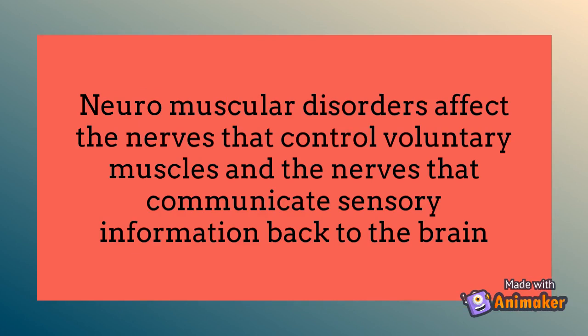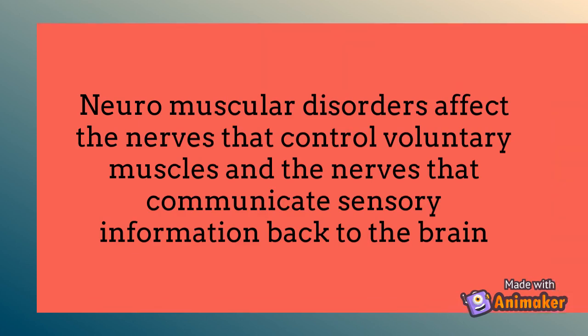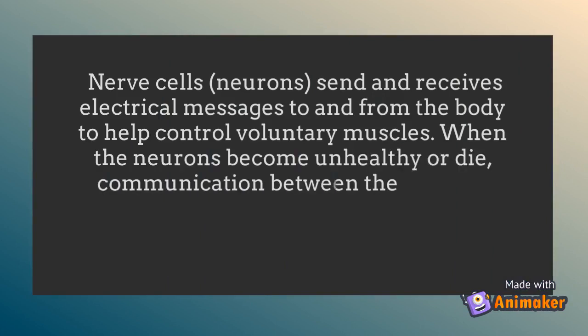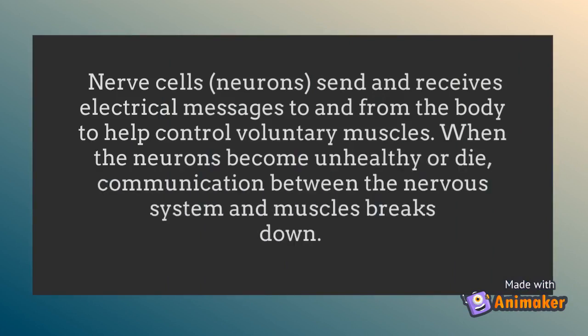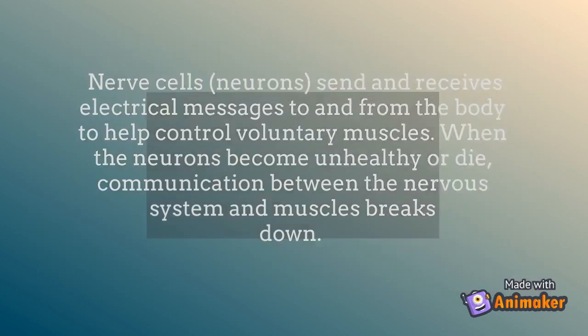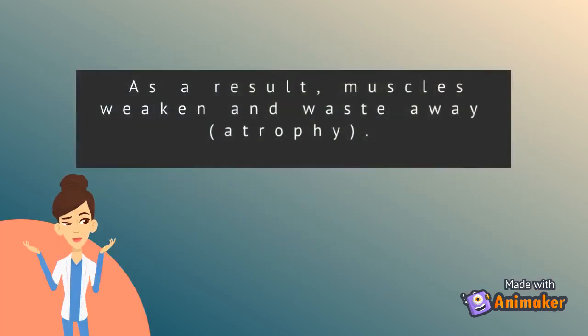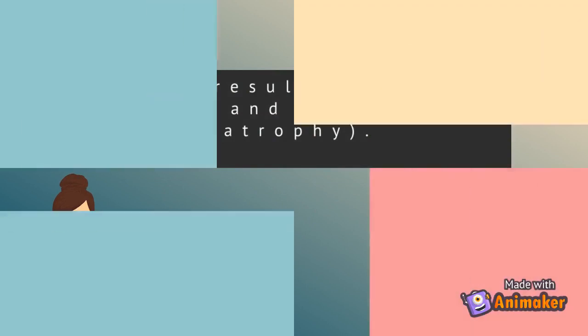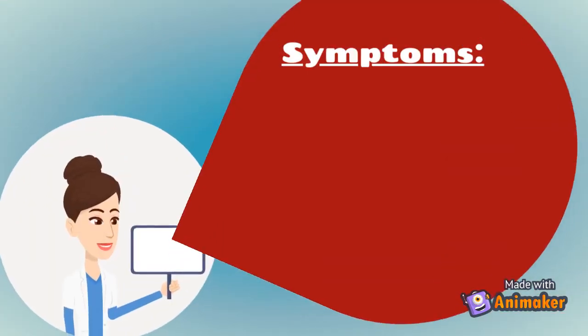Metabolic muscle disorders interfere with the chemical reactions involved in generating energy from food. Neuromuscular disorders affect the nerves that control voluntary muscles and the nerves that communicate sensory information back to the brain. Nerve cells, or neurons, send and receive electrical messages to and from the body to help control voluntary muscles. When the neurons become unhealthy or die, communication between the nervous system and muscles breaks down, causing muscles to weaken and waste.